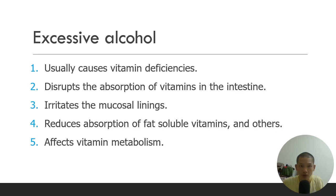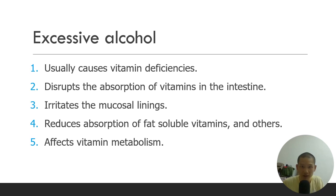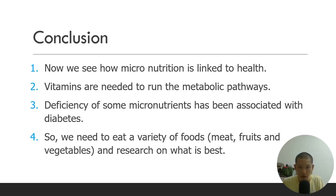Excessive alcohol usually causes vitamin deficiency. Alcohol can disrupt the mucosal lining of the intestine, reducing the absorption of fat soluble vitamins and other vitamins. It can also affect vitamin metabolism inside the body itself. That's why many alcoholics also develop diabetes — one reason could be vitamin or micronutrient deficiency. So alcohol is linked to diabetes.